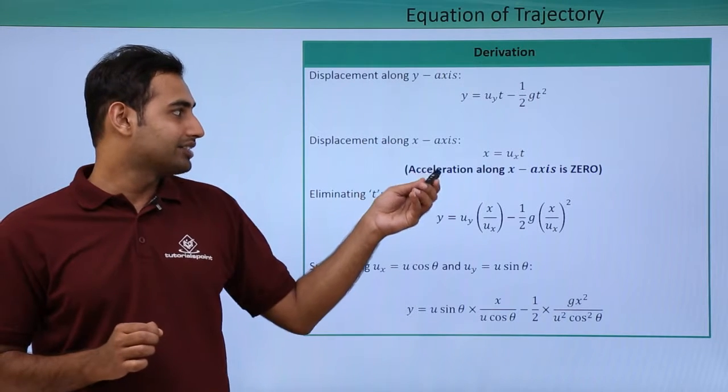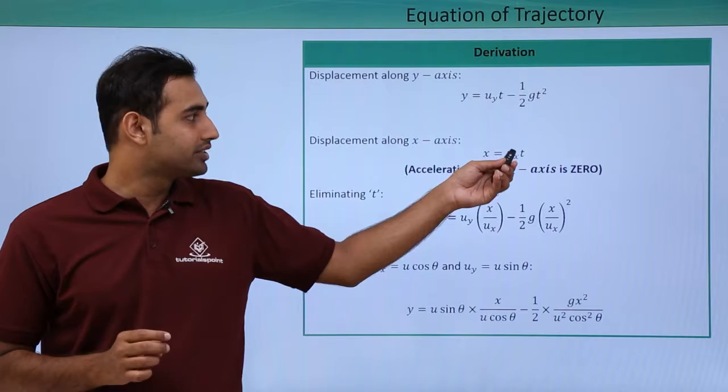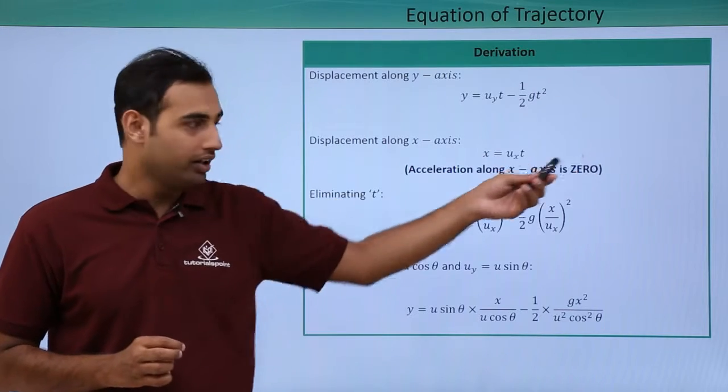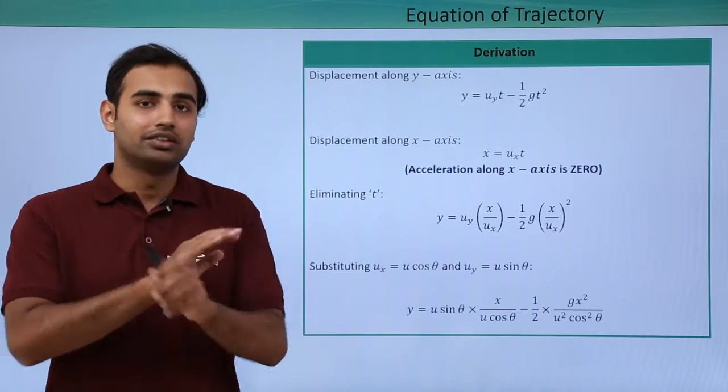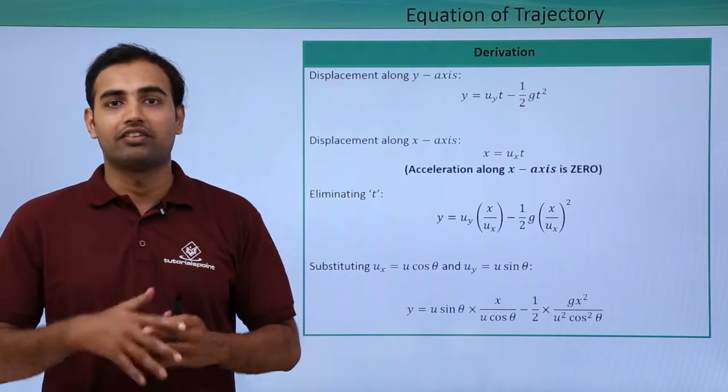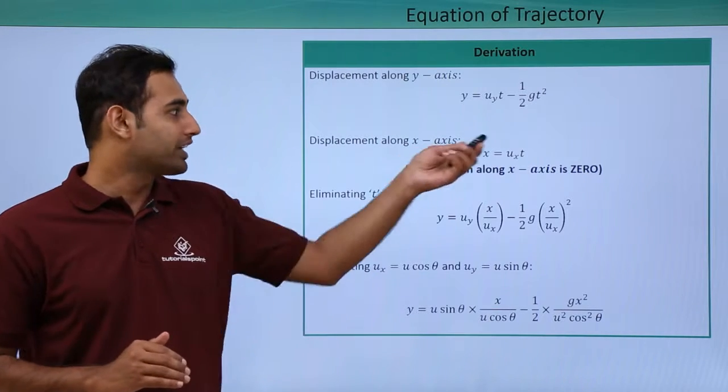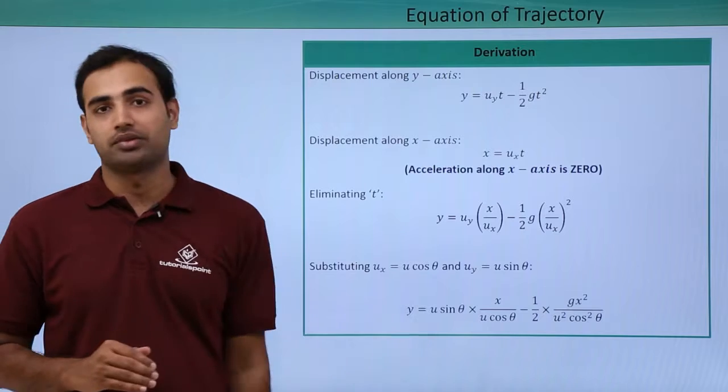Similarly, displacement along the x-axis can be written as x is equal to uxt plus half ax t square. But because acceleration along x-axis is 0, there is no component of acceleration of gravity along the x-axis. So ax becomes 0 and x simply becomes ux into t.